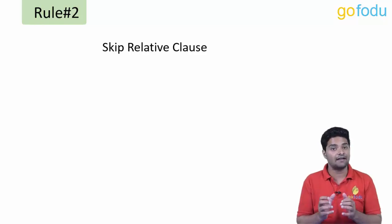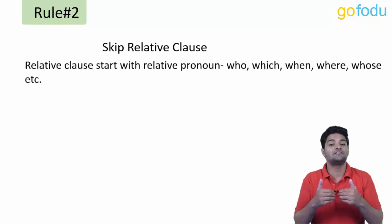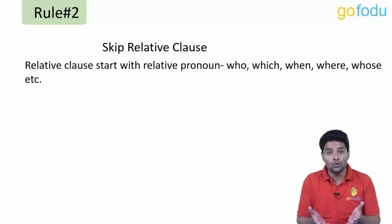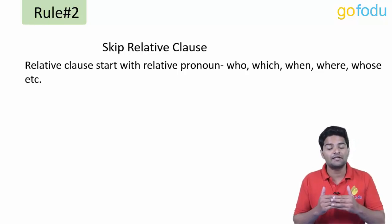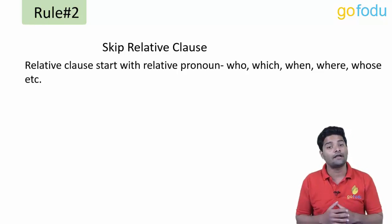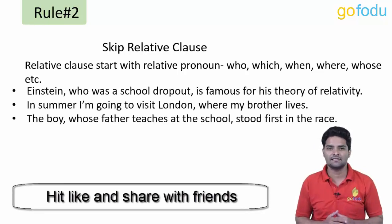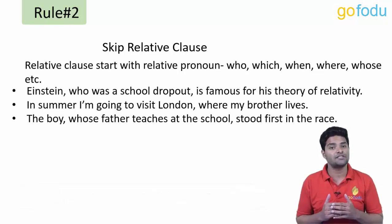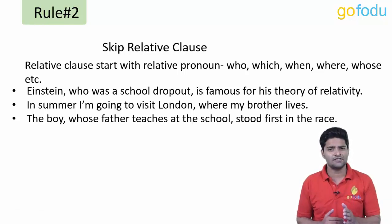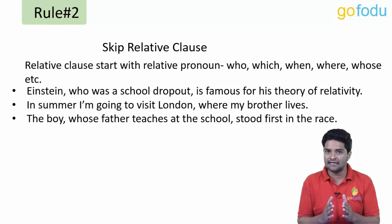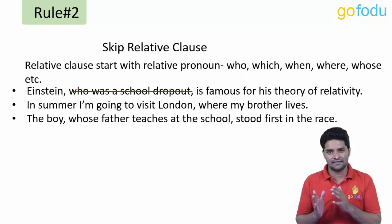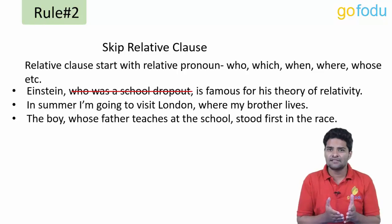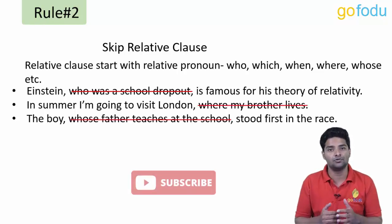A clause is a group of words that includes a subject and a verb. Relative clauses start with relative pronouns like who, that, which, whose, where, or when, and are most often used to define or identify the noun that precedes them. We can skip relative clauses as they often contain extra detail. For example: 'Einstein, who was a school dropout, is famous for his theory of relativity' — the relative clause 'who was a school dropout' can be skipped.